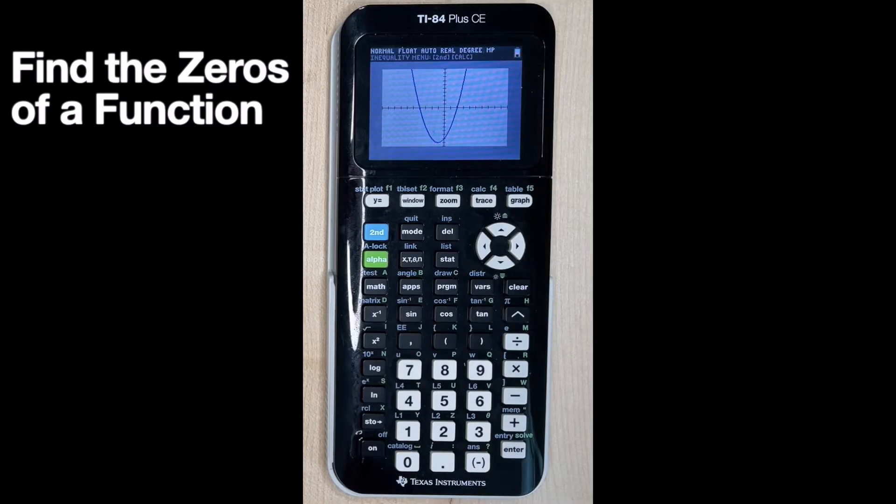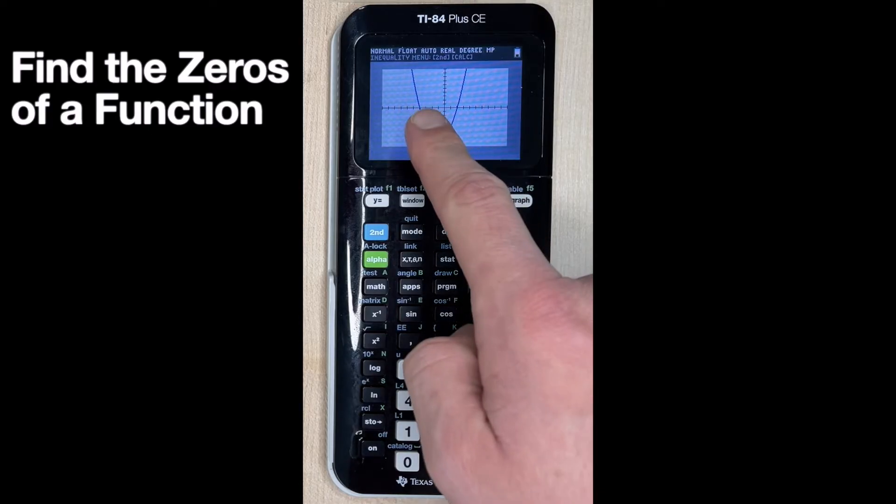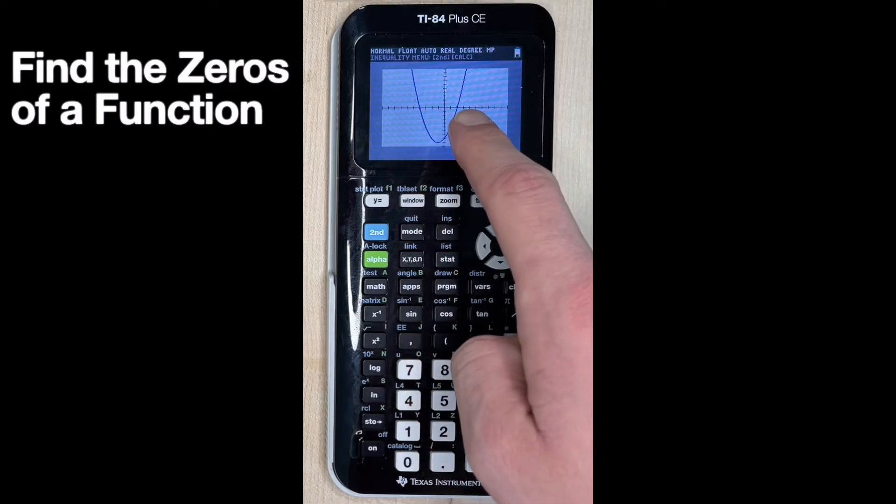Okay, so there's our parabola, and the intercepts are actually the solutions, or what x is equal to when y is equal to zero. We see we have two of them. One is right here, and one is right here.